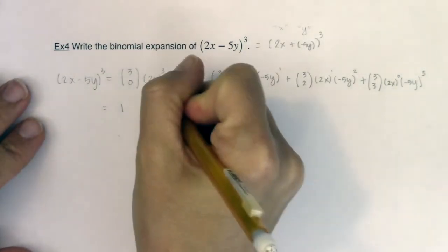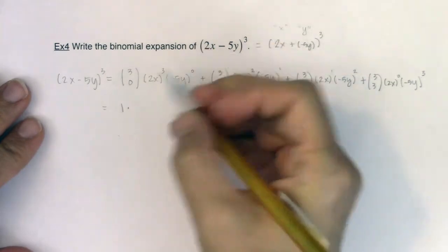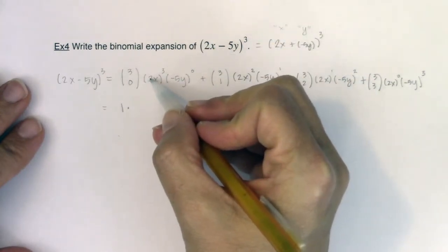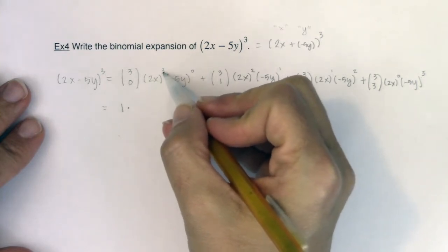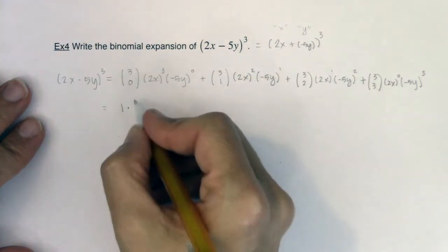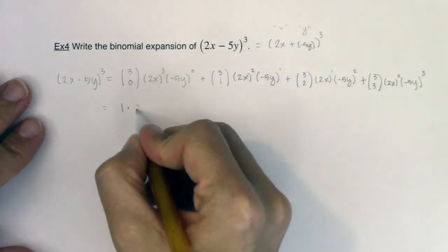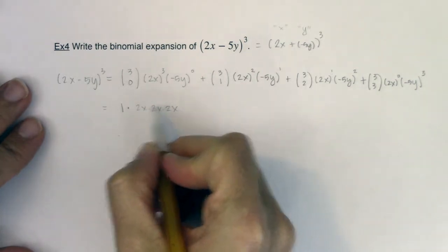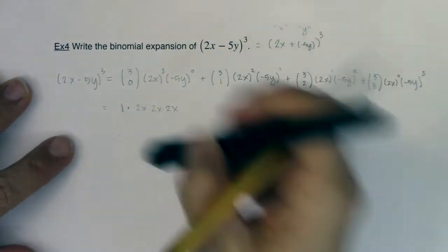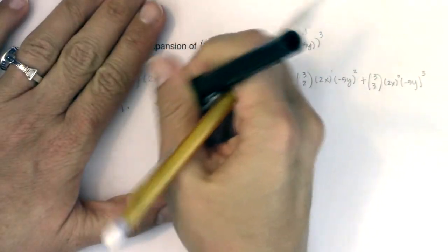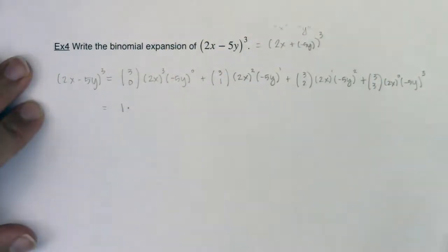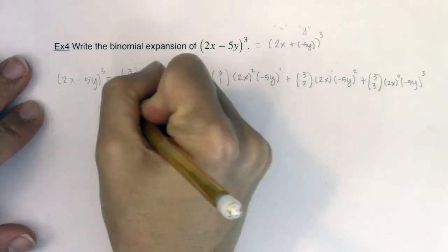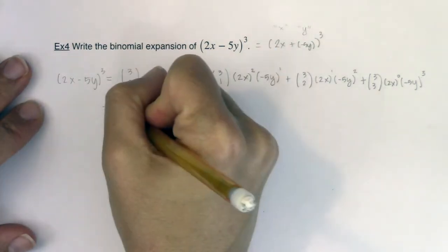So this is going to be 1. Now 2x cubed, we have to distribute the cubing not just to the x but to the 2 as well. So 2 cubed is 8, and x cubed is x cubed. If you're not sure why I'm getting the 8, I want you to think this would have been 2x times 2x times 2x, so 2 times 2 times 2 would have been 8, and x times x times x would have been x cubed. Now I'm just going to write that as 8x cubed. Negative 5y to the 0, well anything raised to the 0 is 1.